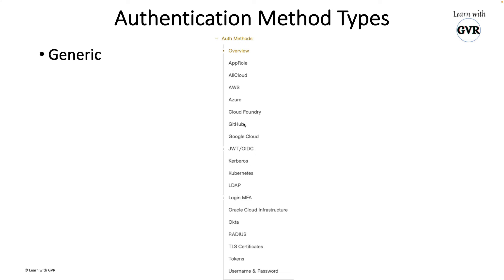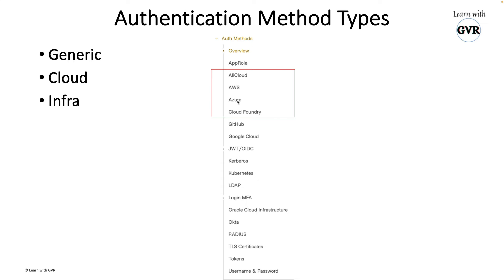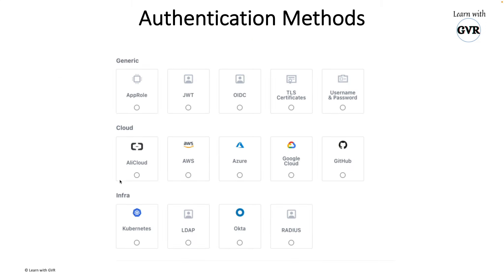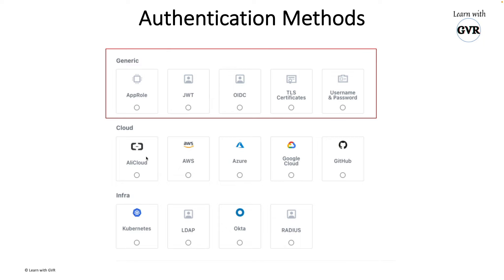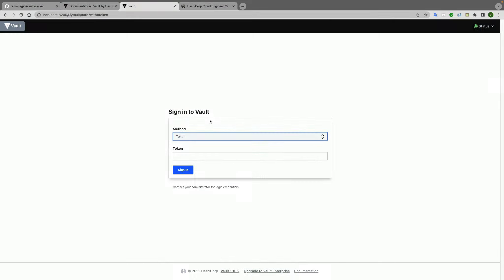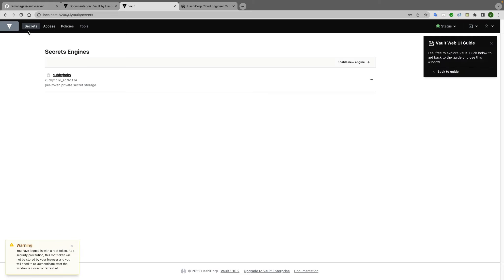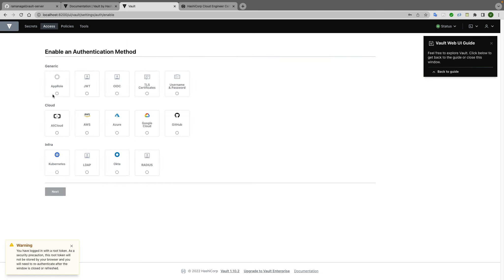Authentication methods are of three types: first is generic, second is cloud-based, and third is infrastructure-related. Cloud-based includes Alibaba Cloud, AWS, Azure, Cloud Foundry, GCP, and Oracle Cloud. Generic includes GitHub, key-value pairs, etc. Infrastructure-based includes Kubernetes, IAM, TLS, and others. In the Vault UI under Access, when you create a new method, you can see these three categories: generic, cloud, and infra.